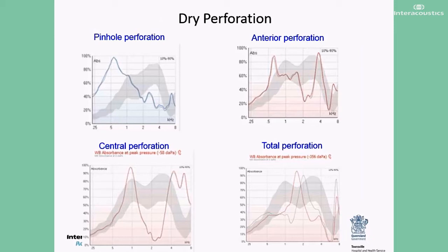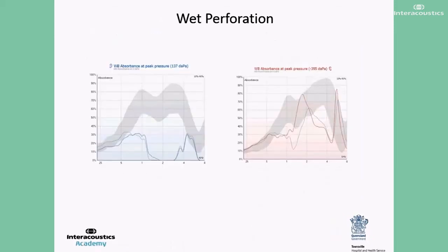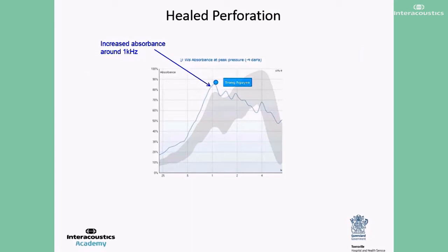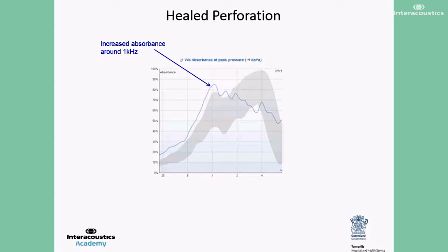Most studies have been reported on dry perforation. Our limited experience has shown that unlike dry perforation, there is no absorbance pattern specific to wet perforation. The next condition is a healed perforation. A compliant tympanic membrane, such as an ear with a healed perforation, demonstrates increased absorbance around the 1000 Hz region. However, the absorbance across the mid to high frequencies will be quite within normal limits. Nevertheless, you have to be careful because even ossicular chain dysfunction can give rise to increased absorbance around this frequency region. Hence, it is important to couple wideband absorbance measures with tympanometry to differentiate between an abnormal tympanic membrane and ossicular chain dysfunction.